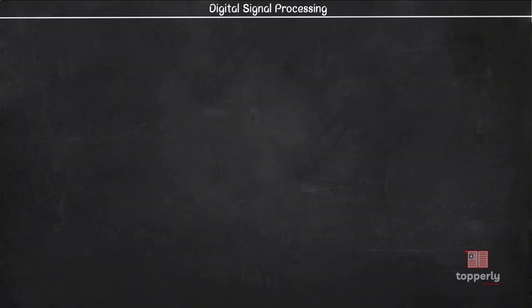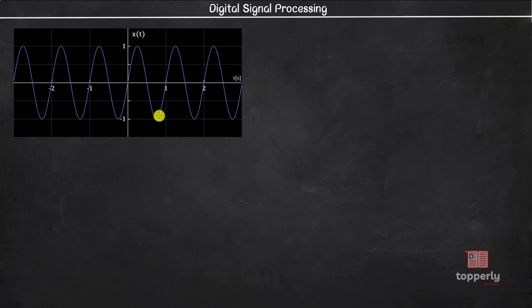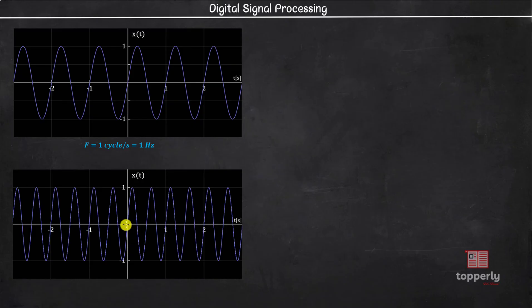Before going into our main topic, let's just review the notion of frequency for continuous time signals. Here is a continuous time signal. The x-axis here has unit in seconds. You can also see that the signal completes one cycle in one second, so the frequency of this continuous time sinusoid is f equal to one cycle per second, or in other words, equal to one hertz. Now consider this new signal — the signal completes two cycles in one second, so the frequency is f equal to two hertz.